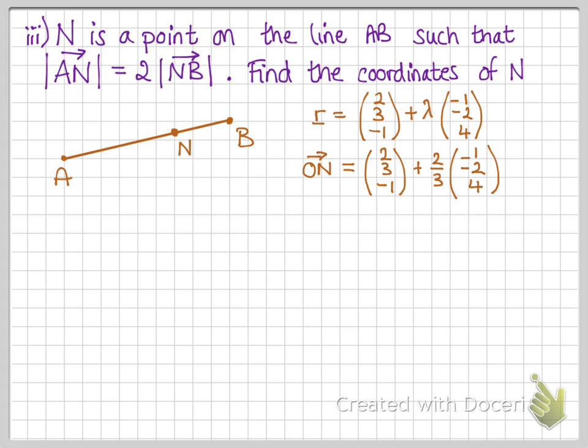Now, our position vector, ON, would be as follows. So, we have that equation of the line. Now, N is 2 thirds along the way of AB. So, lambda would be 2 thirds in this case. And then we can go through and work out what that would come to as a position vector and then translate that into coordinates so that we've got the coordinates of N.